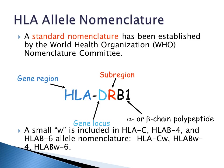There is a standard nomenclature established by the World Health Organization, or WHO, nomenclature committee. You have your gene region — the HLA — the gene locus, the sub-region, and then your alpha or beta chain polypeptide. Sometimes a small W is included in the HLA-C, HLA-B4, and HLA-B6 allele nomenclature, which would be written as HLA-CW, HLA-BW4, and HLA-BW6.